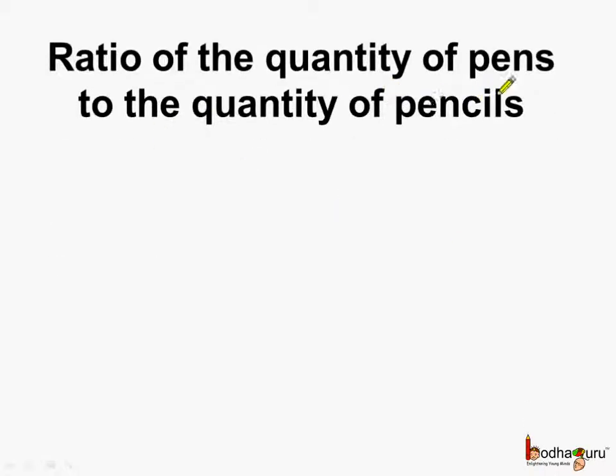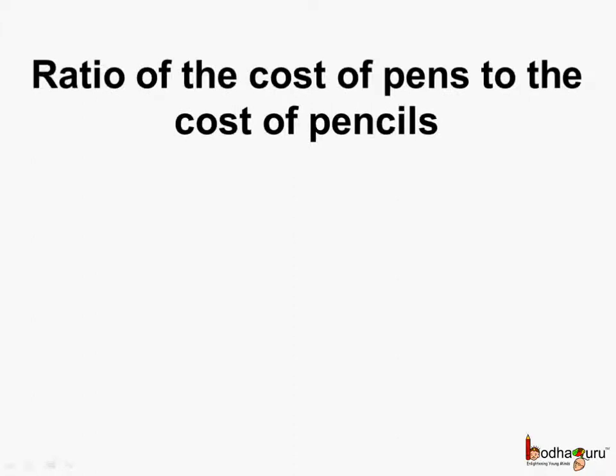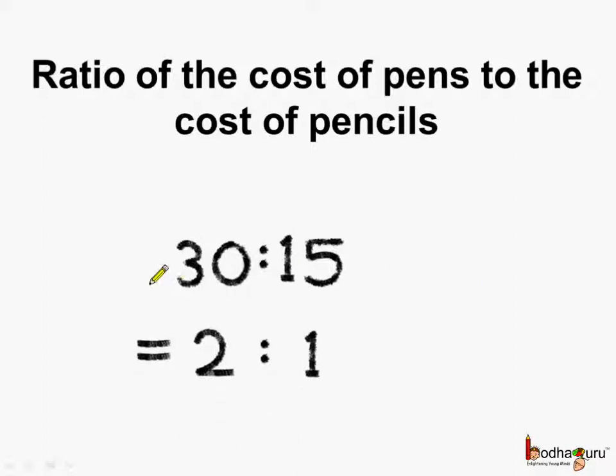The ratio of quantity of pens to the quantity of pencils is equal to 3 is to 5, as 3 pens were bought and 5 pencils were bought. And the ratio of cost of pens to the cost of pencils is equal to 30 is to 15, as 30 rupees were paid for the pens and only 15 rupees were paid for the pencils.